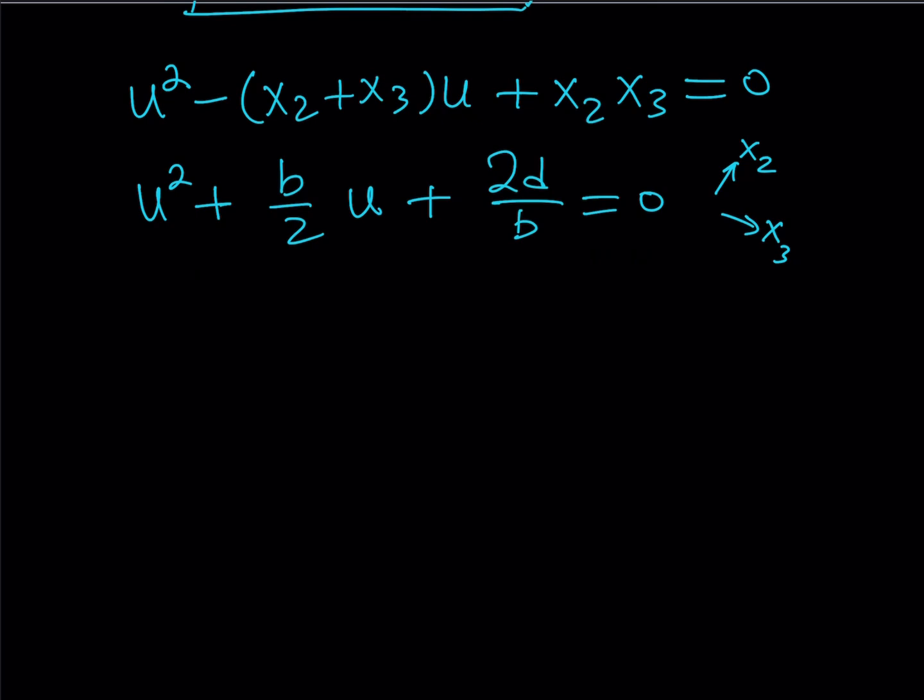We're going to use the quadratic formula. But shouldn't I just multiply both sides by something to get rid of all the fractions? Let's do that. Let's multiply everything by 2b, and I can say that 2b or not 2b. So multiplying both sides by 2b gives me 2bu squared plus, when I multiply by 2b, 2 cancels out, so that gives me b squared u, and the b cancels out giving me 4d from here.